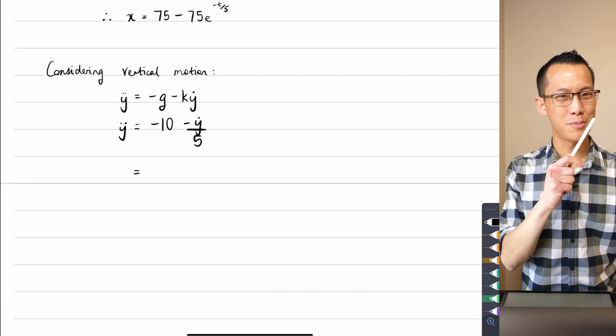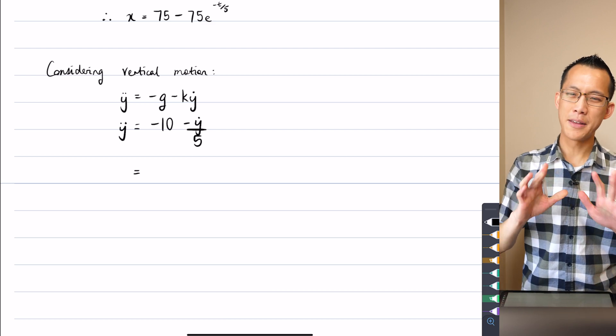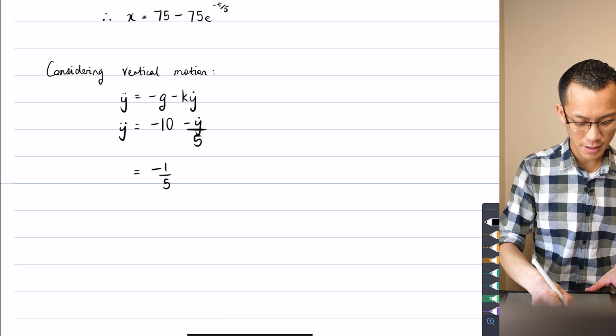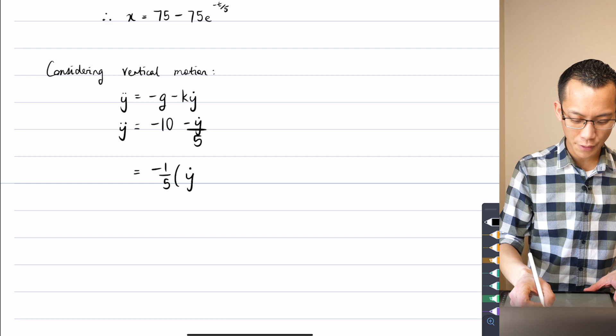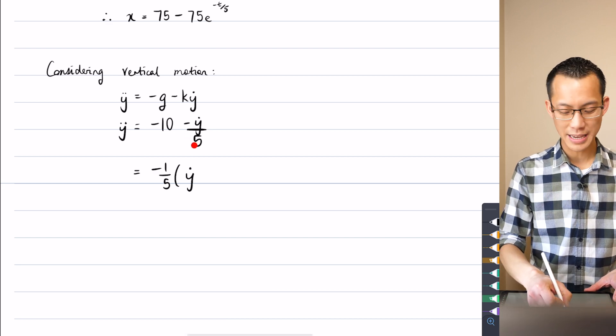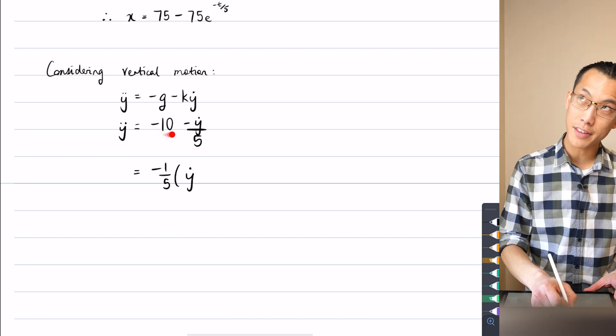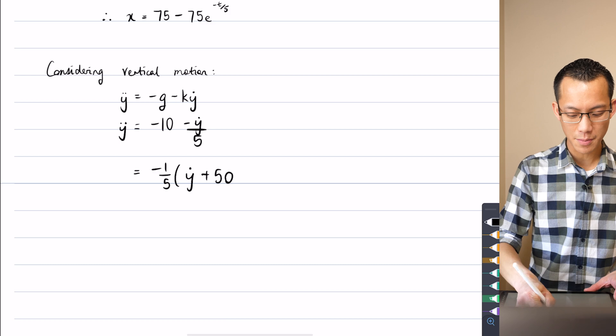So what I'm going to do is just a bit of factorizing here. So if I take out a factor of negative a fifth, what am I going to get here? I'm going to put that y dot out the front because you can see negative fifth just comes out of that cleanly. The negative is easy to pull out. But if I'm pulling out a fifth as well, then this thing ought to become five times bigger on the inside. So I'm just going to get that.